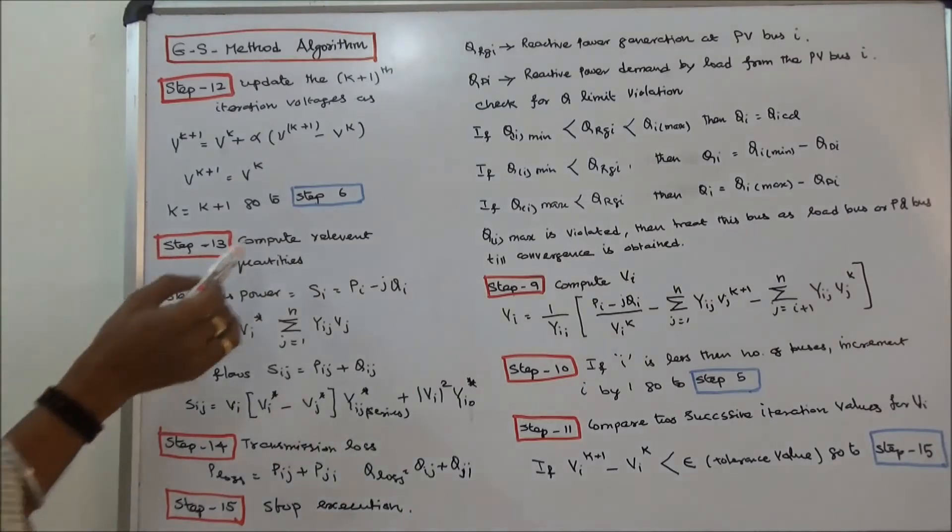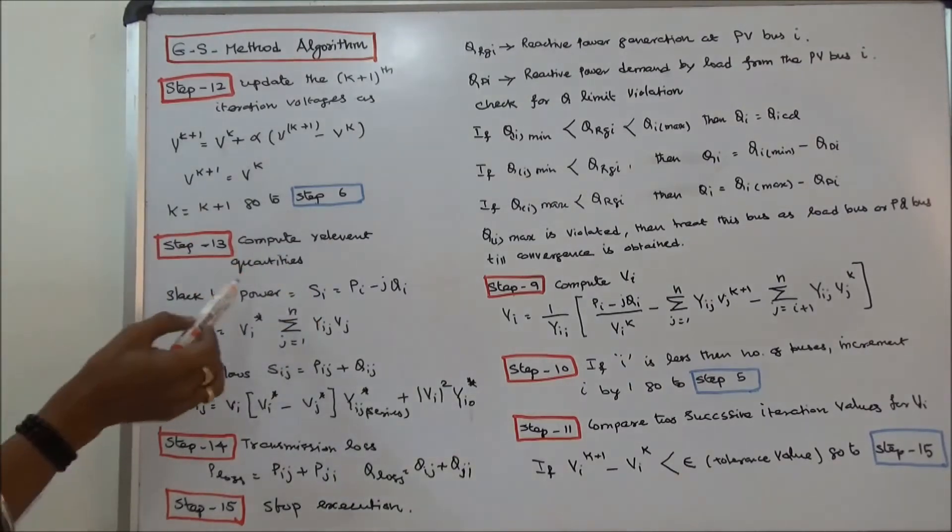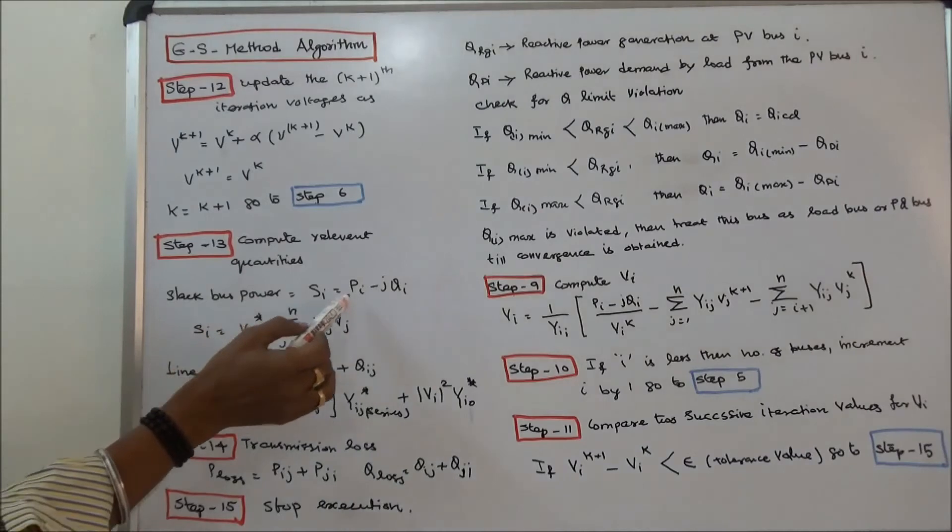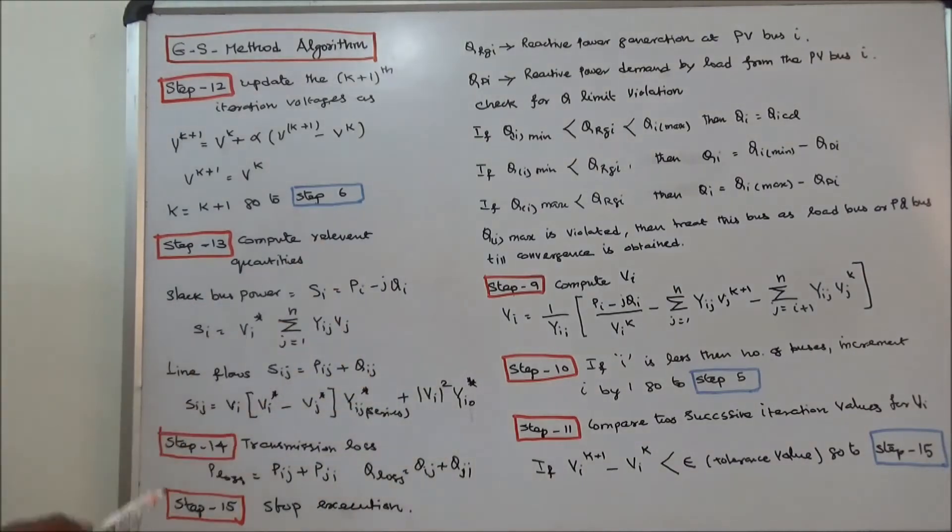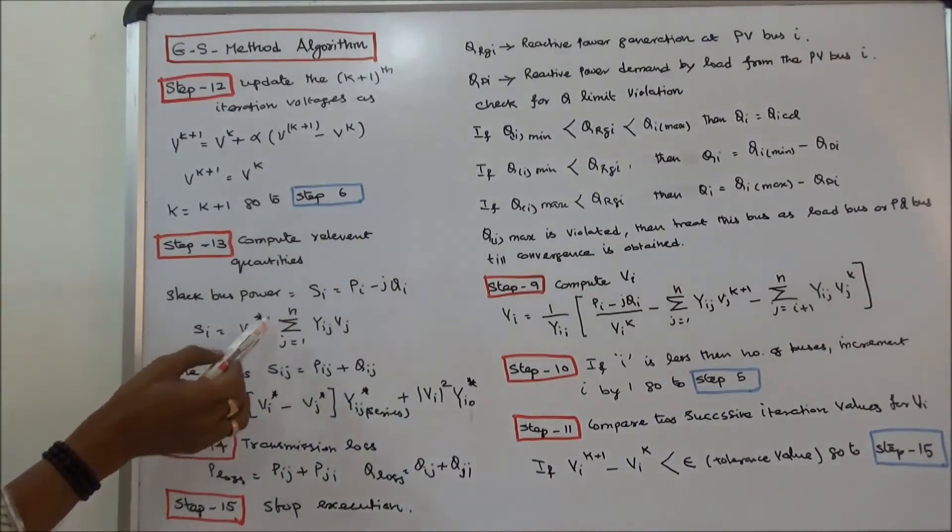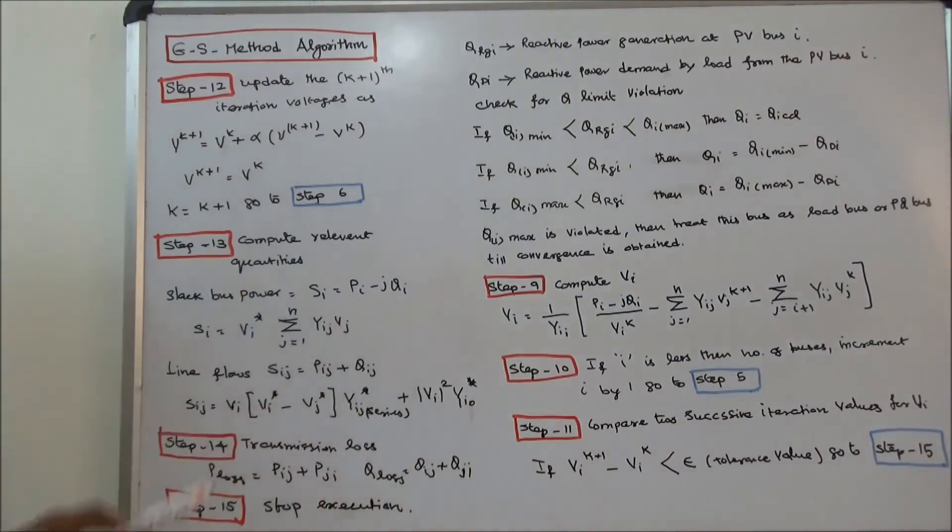Step 13: Compute relevant quantities. That is complex power. SI is equal to PI minus j QI. SI is equal to VI conjugate sigma J is equal to 1 to n YIJ into VJ. Then we have to calculate the line power.